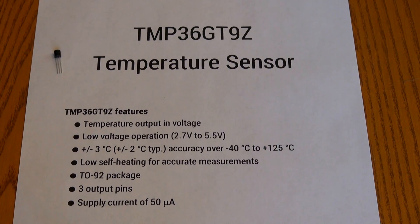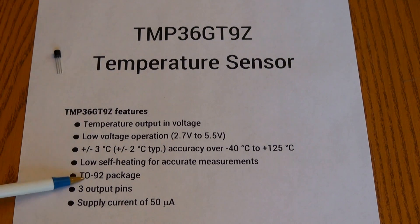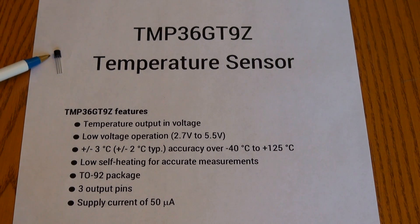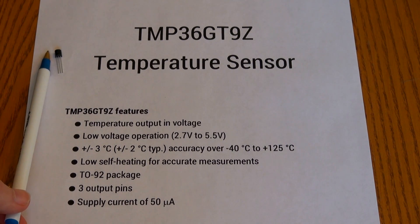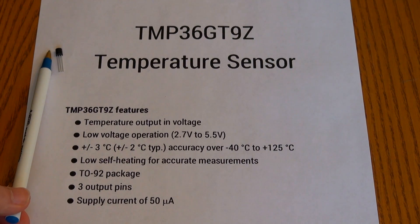This next point also kind of ties into the accuracy. It has very low self heating, which will provide the most accurate measurements that you can. As you can see from up here, this is the TMP 36 itself. This is not a close up just to give you a little bit of a scale. This is like the tip of a pen. So it's extremely small, which is great if you're looking to use it in an application where space is limited.